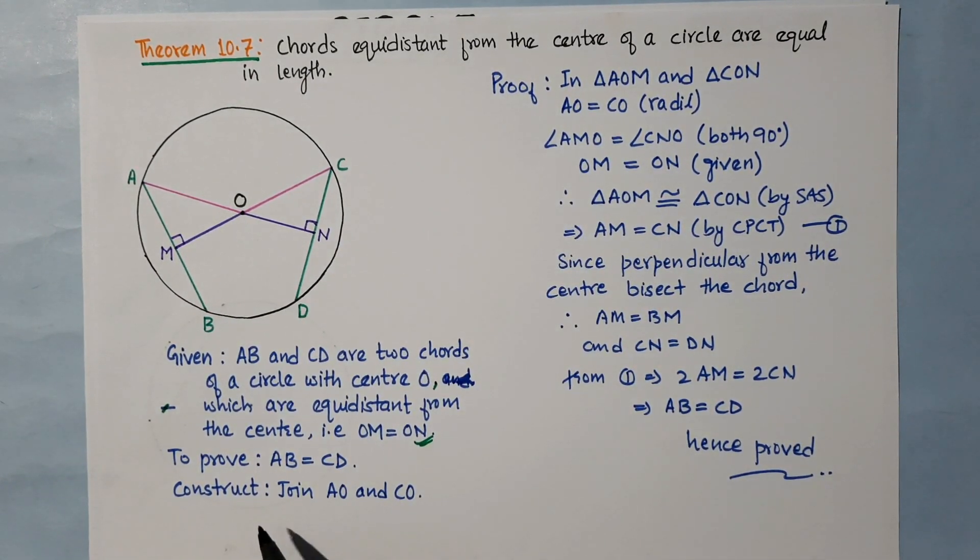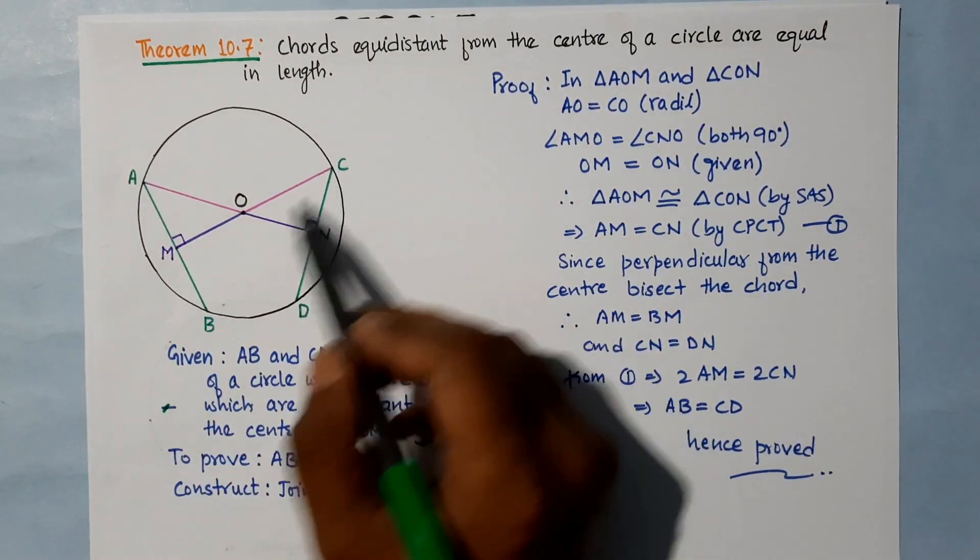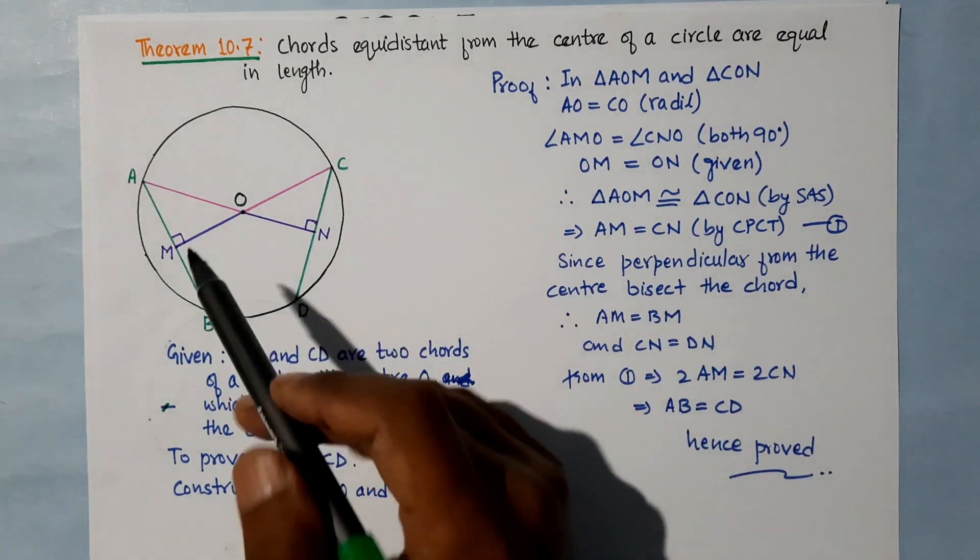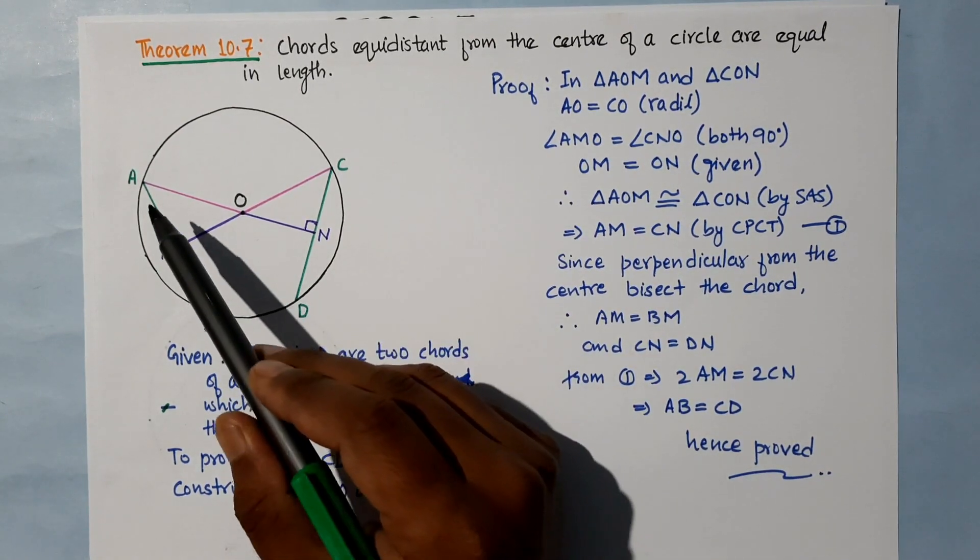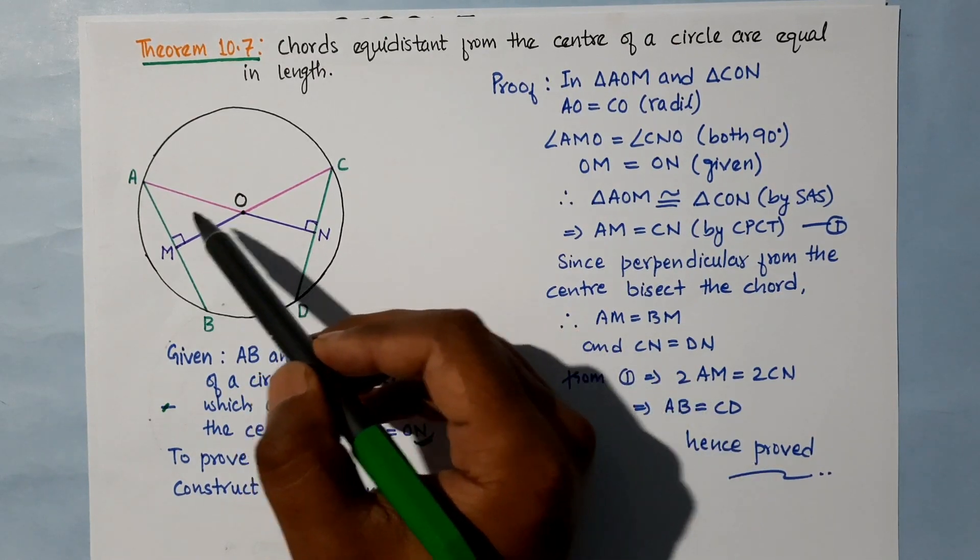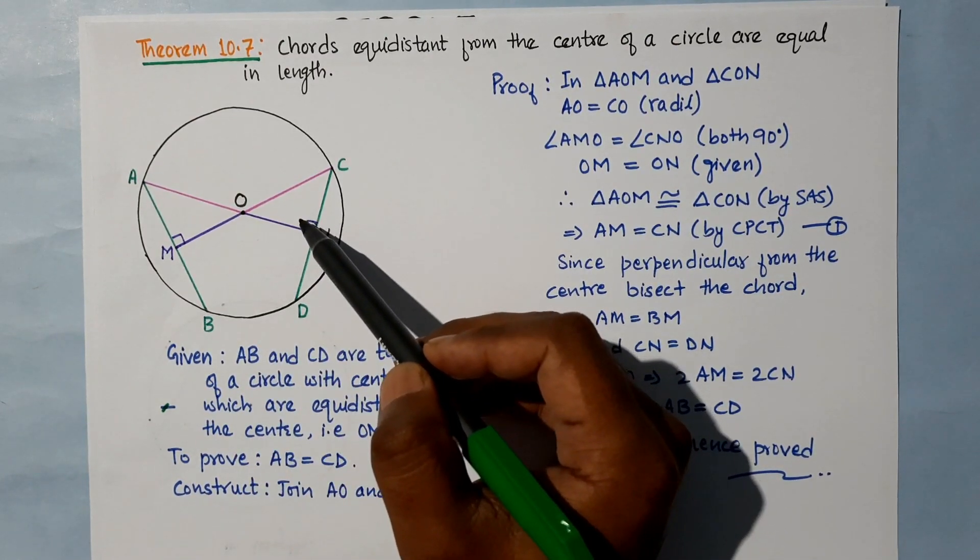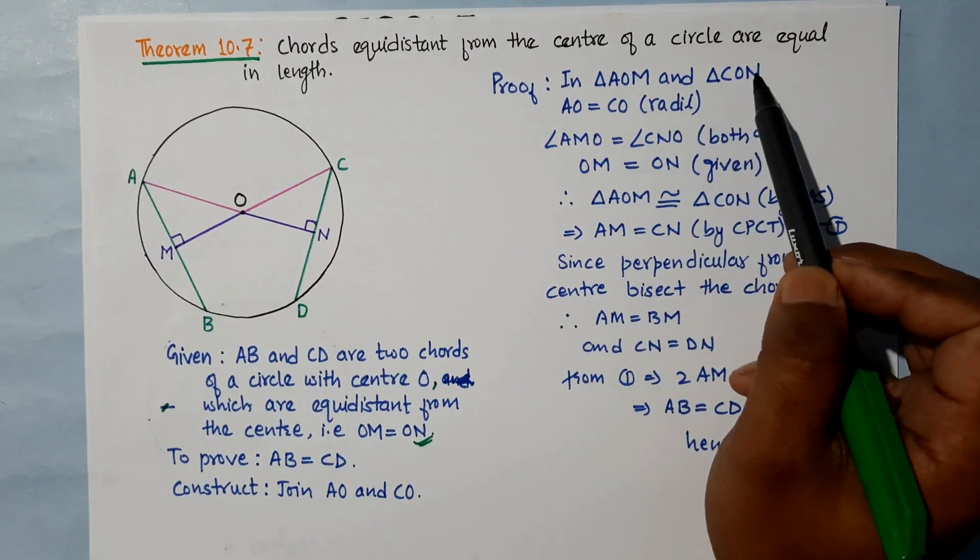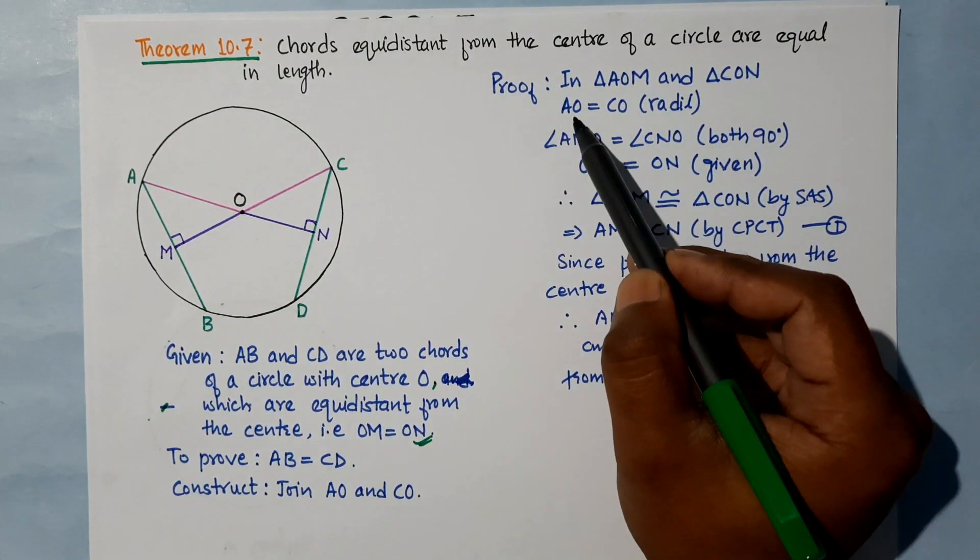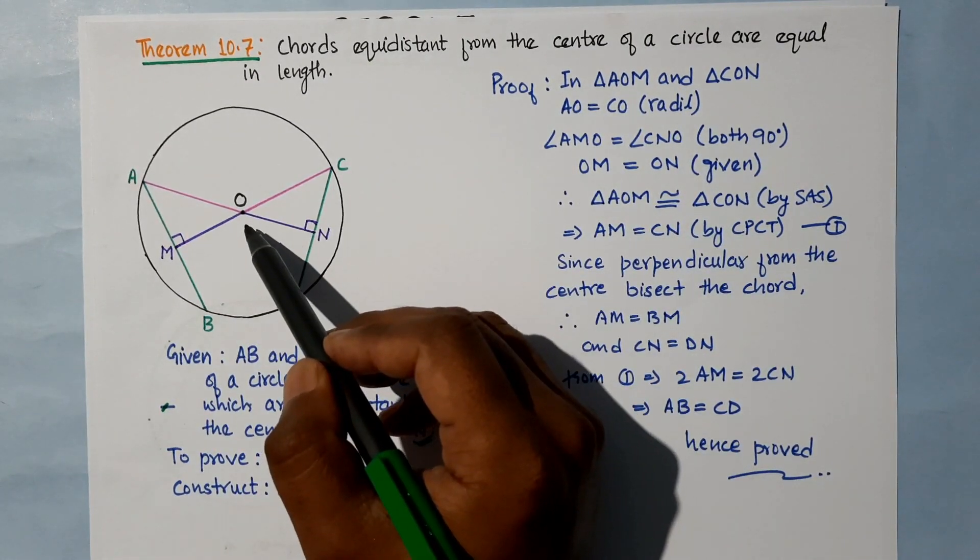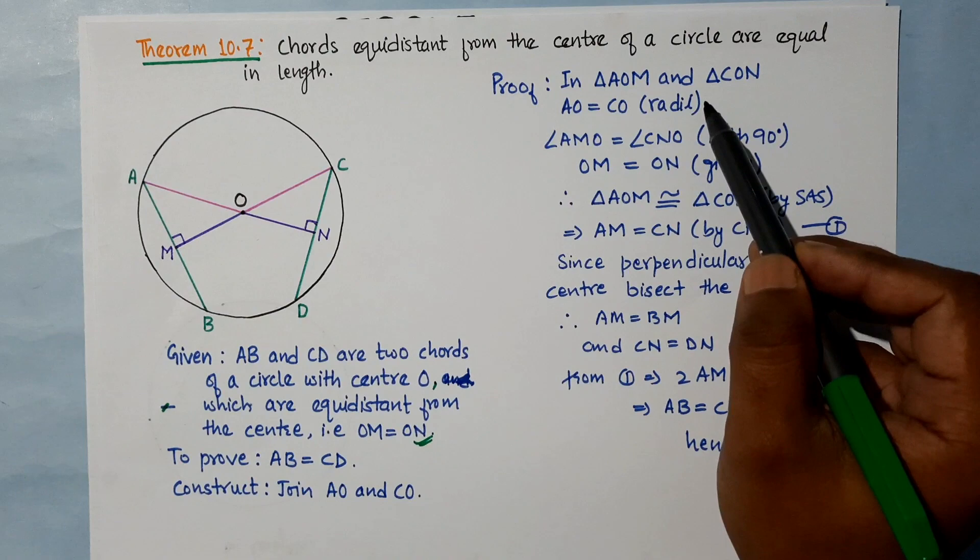Now construct: we have to join AO and CO. Both are radius. We have to join triangle AOM and triangle CON. These triangles are congruent: triangle AOM congruent to triangle CON.